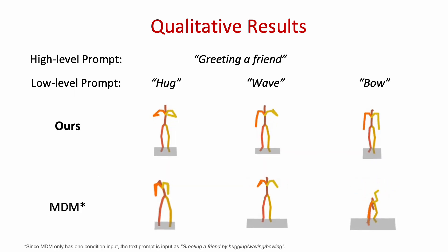Here are some qualitative results of our Motion GPT in comparison with the state-of-the-art method MDM. With the same high-level text prompt, greeting a friend, and different low-level prompts such as hug, wave, and bow, it can be observed that MDM, which conditioned on concatenated high- and low-level text prompts, generates poor quality motions, while our model conditioned on both texts yields consistent and good quality motions aligned with the text prompts.